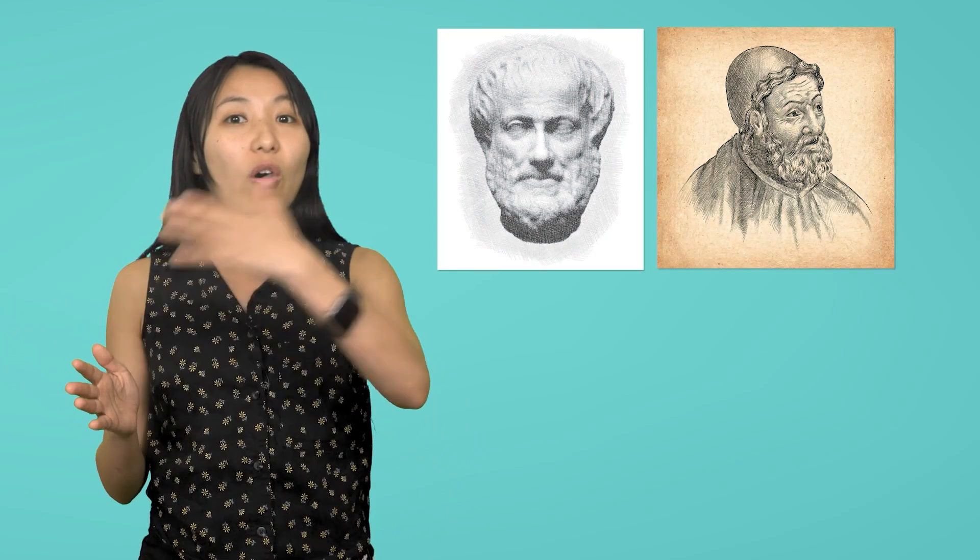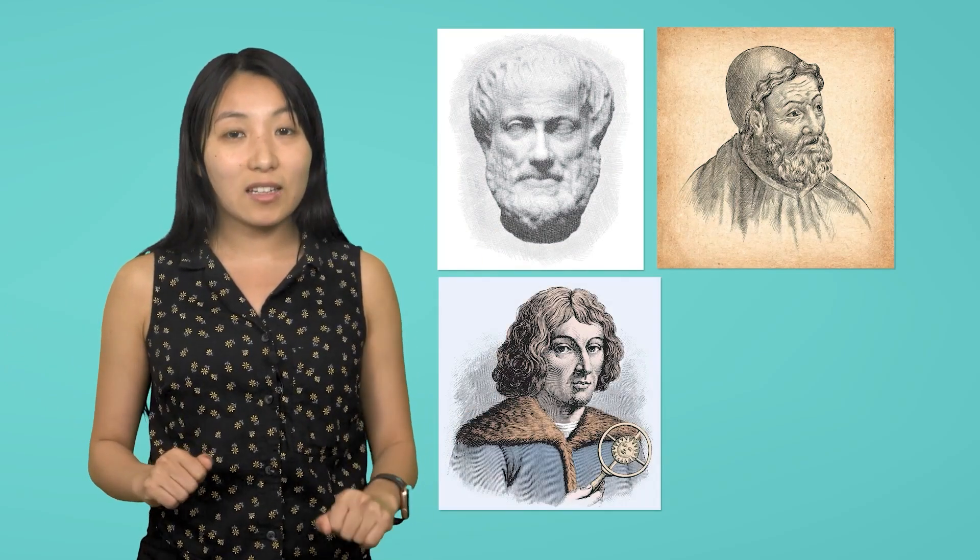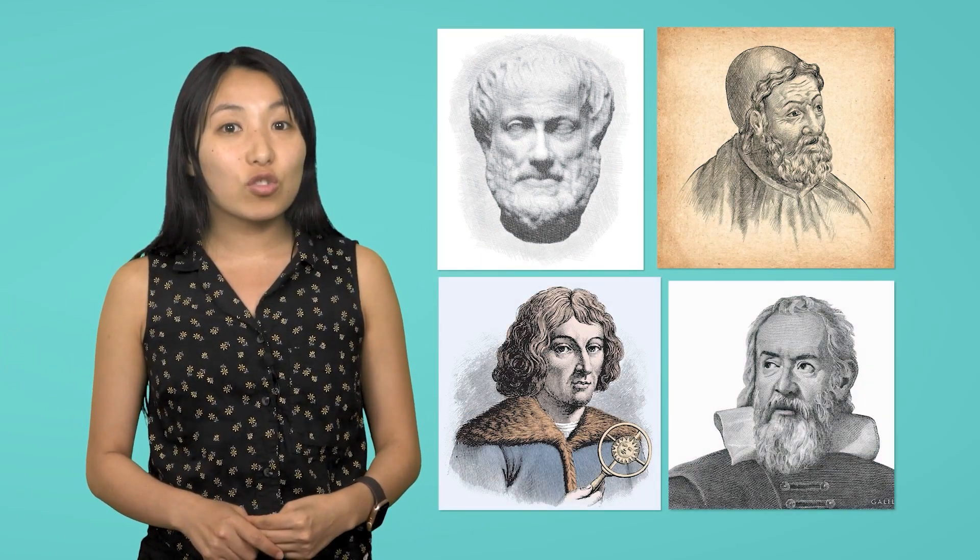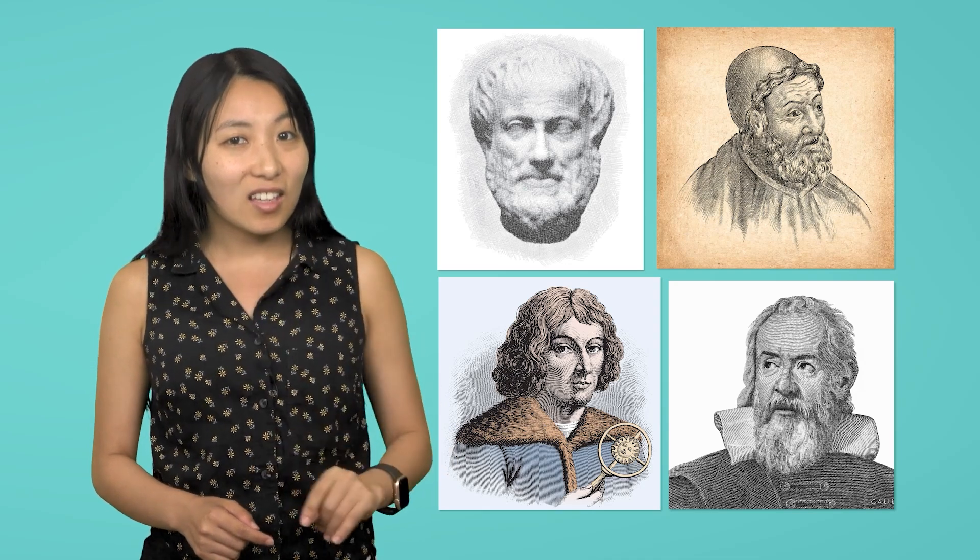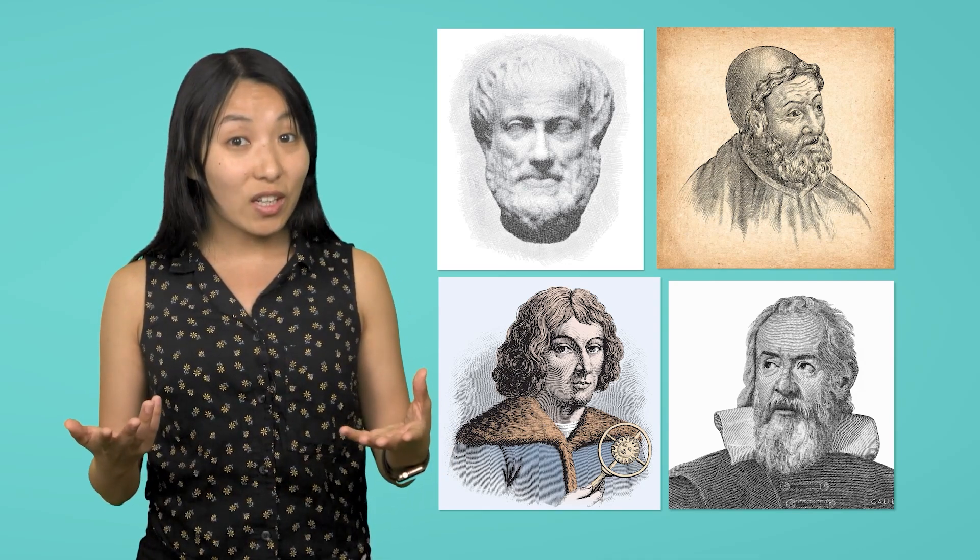From Aristotle and Ptolemy all the way to Copernicus and Galileo, every influential astronomer's ideas had one key thing in common. Can you think of what it is?